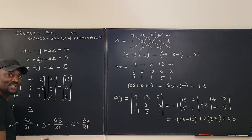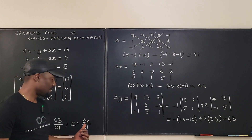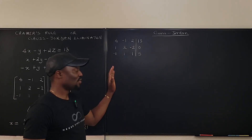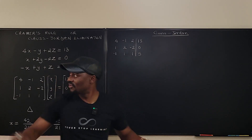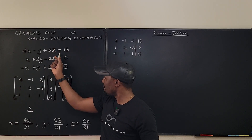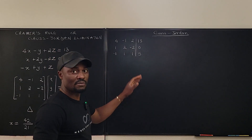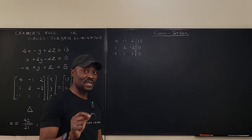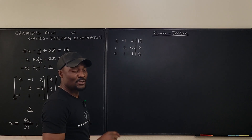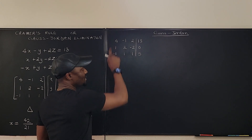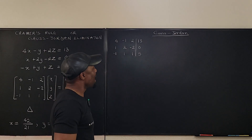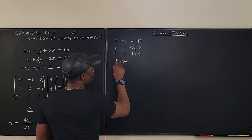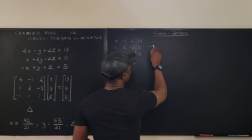So Y equals 3. Now compute Delta Z yourself — you should get 4 for Z. Here is the setup for Gauss-Jordan elimination: copy the system into an augmented matrix with a vertical line for the equals sign: row 1 is 4, -1, 2, 13; row 2 is 1, 2, -2, 0; row 3 is -1, 1, 1, 5. My recommendation: put the smallest leading number on top, so I'll switch R1 with R2.